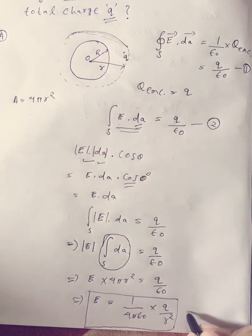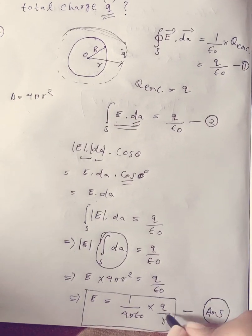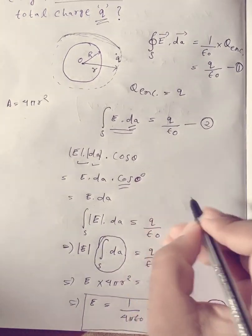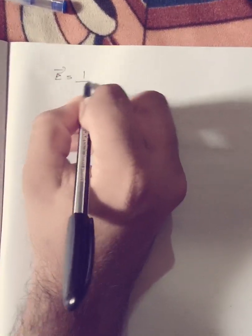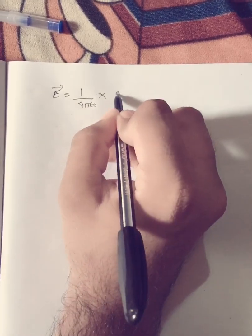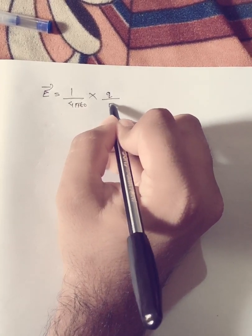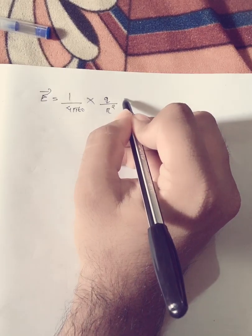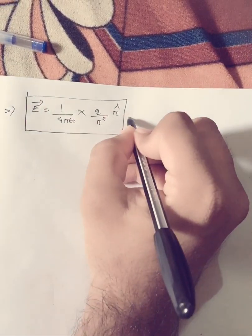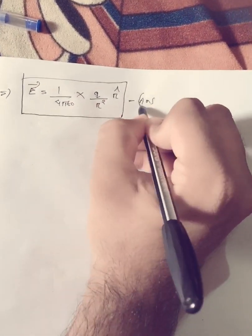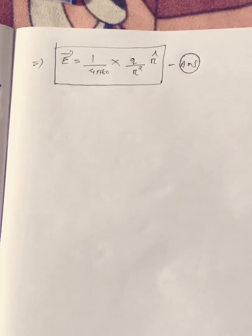This is the first application of Gauss's Law — the solid sphere. This is my answer. In vector format, the electric field vector equals 1 by 4 pi epsilon-0 times Q divided by r squared, multiplied by r-hat. Here r is the separation vector and r-hat is the unit vector. This is the vector format of the answer for the first application of Gauss's Law. Thank you.